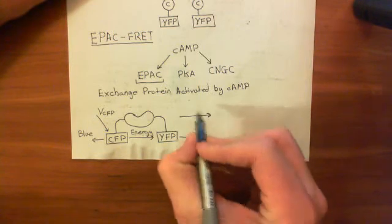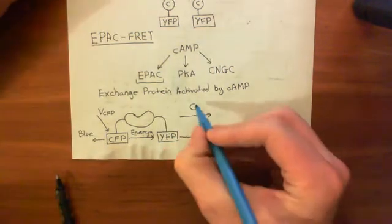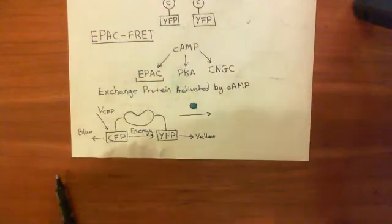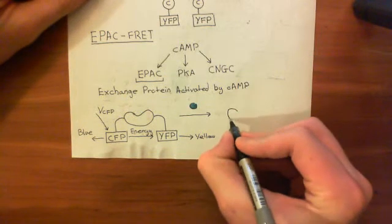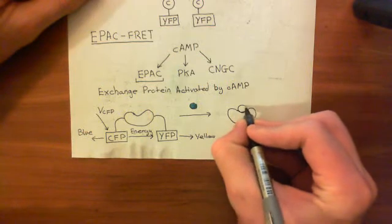But now, let's say cyclic AMP goes up. So here is our cyclic AMP molecule again. If cyclic AMP goes up, what happens now? Cyclic AMP is going to bind to that cyclic AMP binding site on this EPAC protein. So let's draw that in. Here's our EPAC and here's cyclic AMP now bound.